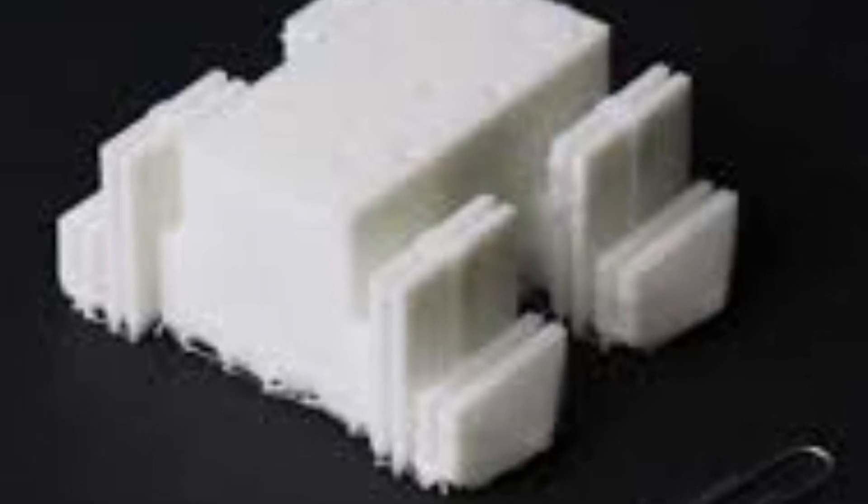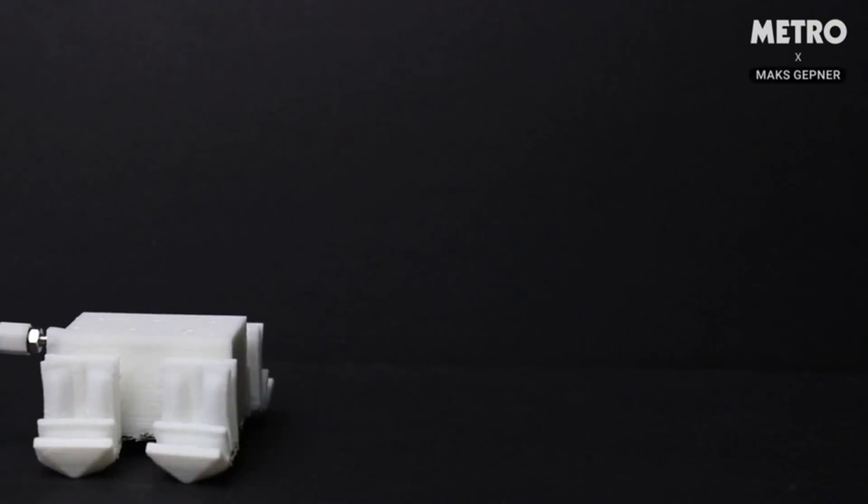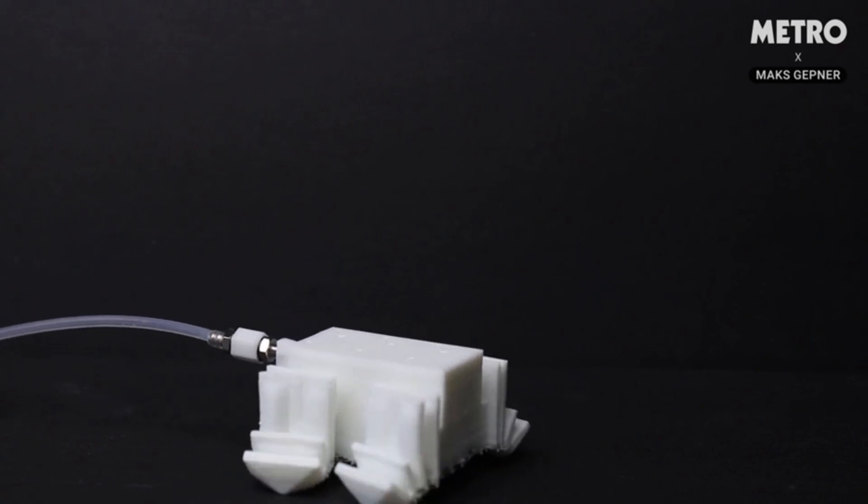However, the Flex Printer solves this problem by using a special type of gel that remains soft and flexible even after being printed. This allows the robot to move in a more natural and lifelike manner, making it less likely to get stuck or caught on objects in its path.